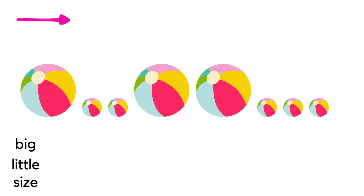Here's some more practice. The first ball is big, the second ball is little, the third ball is little, the fourth ball is big — and you could keep going. I could also ask: what size is the sixth ball? The sixth ball is little. What size is the fourth ball? The fourth ball is big.